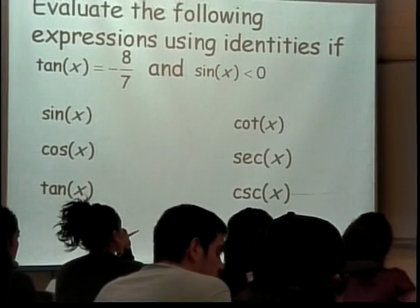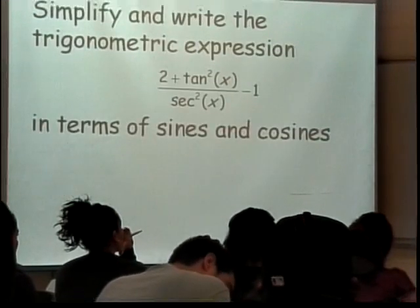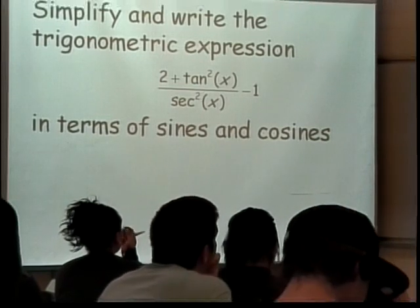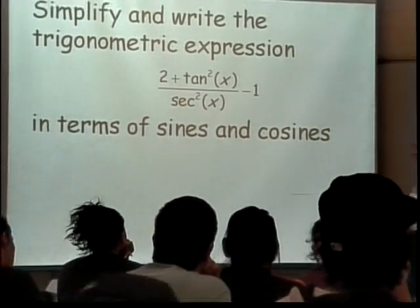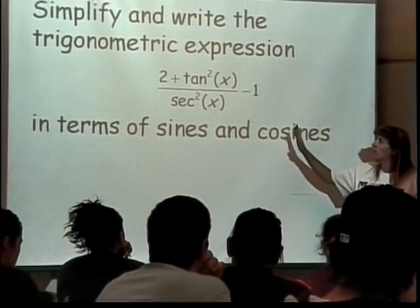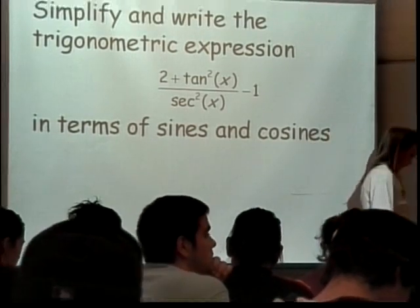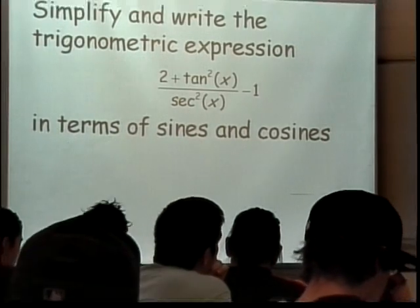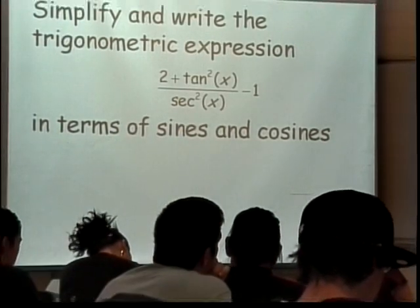I suggest triangles is the way to go, so it's not really an identity issue anymore. So, we want to take this thing and simplify it and write it in terms of sines and cosines. And see how simple we can get. Because that's the gist of what we do when we're doing identities.